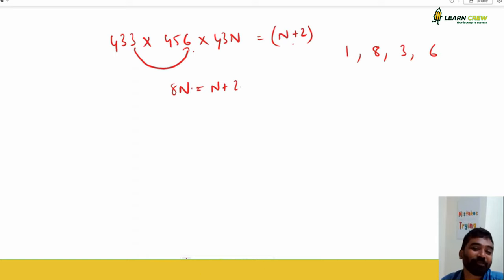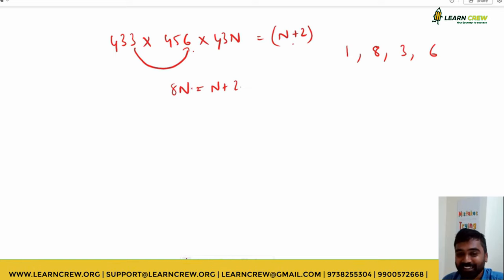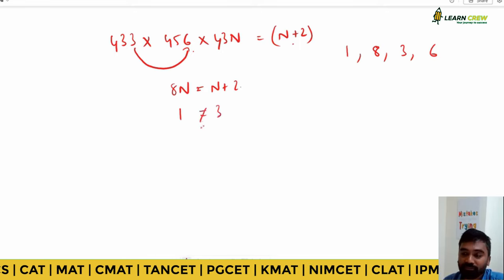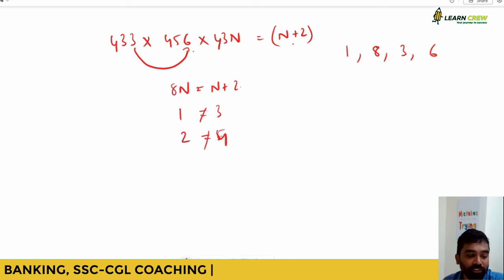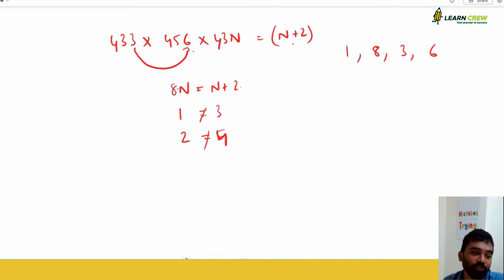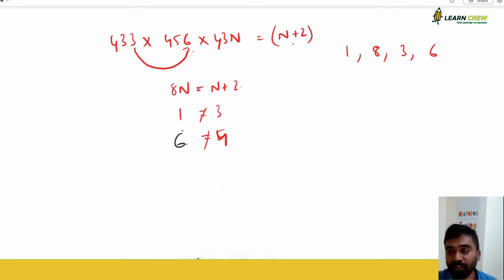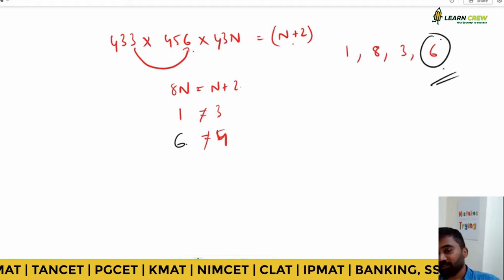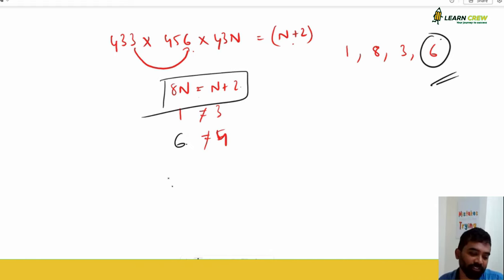You take the units place for simplification — you are not subtracting, just simplifying. Substitute options for n: if n=1, 1+2=3, not equal. If n=2, answer is four, not two. If n=3, eight threes are 24 — unit digit six; six is not equal to five. If n=8, eight eights are 64 — unit digit four; four is not equal to ten. If n=6, eight sixes are 48 — unit digit eight; six plus two equals eight. That matches — check with options, substitute, and verify.